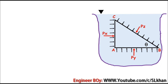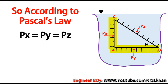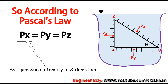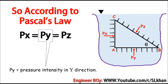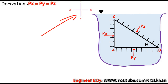So, according to Pascal's Law, the intensity of pressure in all directions is the same, which means PX equals PY equals PZ. Now, how do we derive this equation — how do we prove it? Let's assume a directional map like an X axis and Y axis, and we'll apply the equilibrium equations.